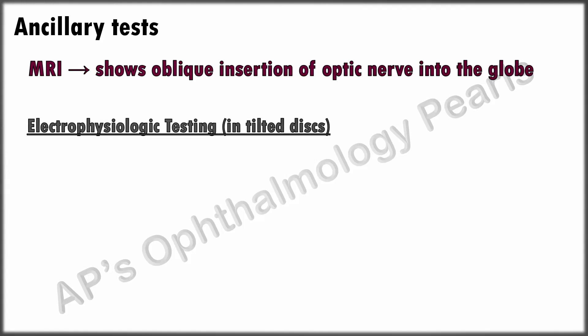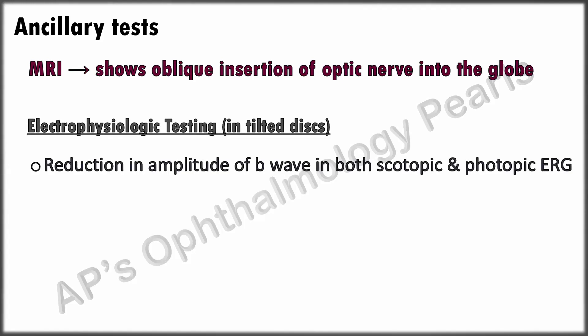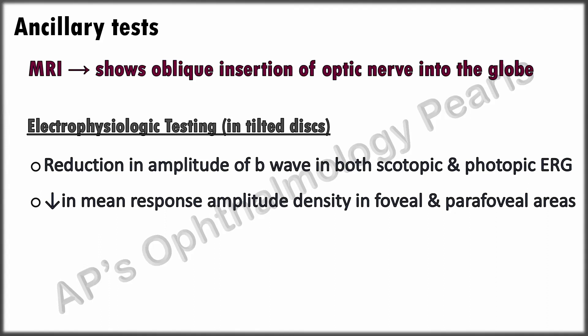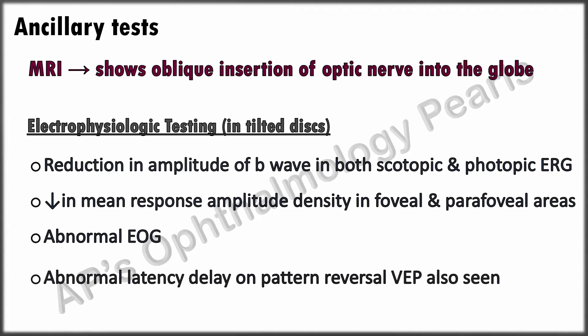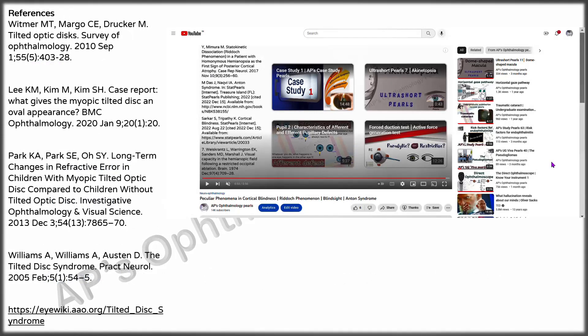Electrophysiologic testing: a reduction in amplitude of the b-wave is seen in both scotopic and photopic ERG. Some studies have found a reduction in mean response amplitude density in the foveal and parafoveal areas, indicating macular involvement in tilted disc syndrome. Abnormal EOG and abnormal latency delay on pattern reversal VEP are also seen.